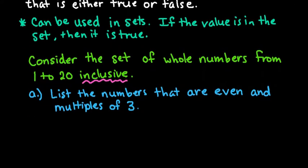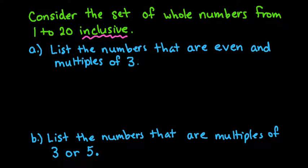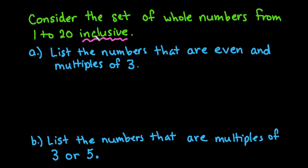The first one we're going to do is look for the numbers from 1 to 20 that are even and multiples of 3. Anytime it says 'and,' this is the intersection, so that means it's in both sets.